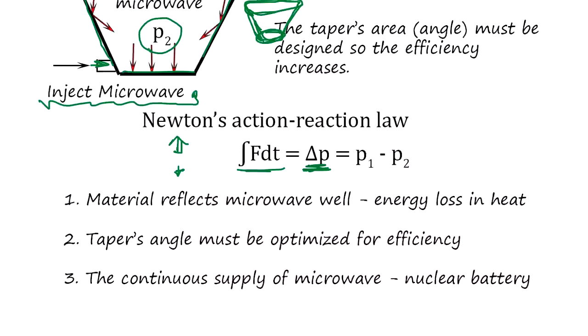The design consideration is material reflects microwave well. Because if it doesn't reflect microwave, microwave is absorbed and becomes energy loss. It's turned into heat. Then cavity starts heating up. So material should be very good conductor material like copper.